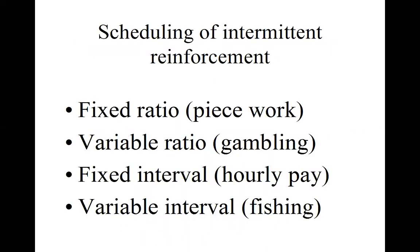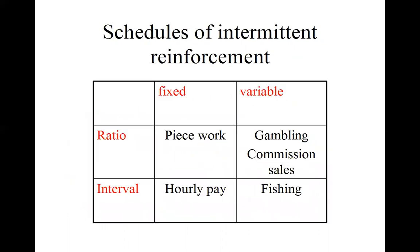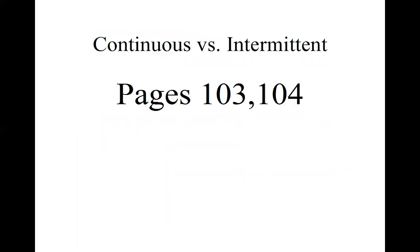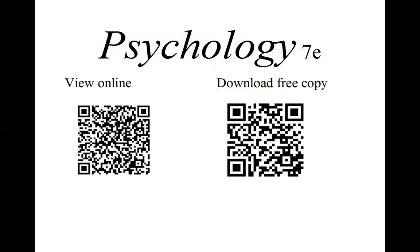There are different kinds of ways of scheduling intermittent reinforcement. Piece work, hourly pay, and the results a fisherman gets are all examples. These examples are analyzed on pages 103 and 104 of your textbook. You can view it online or even download a free copy.